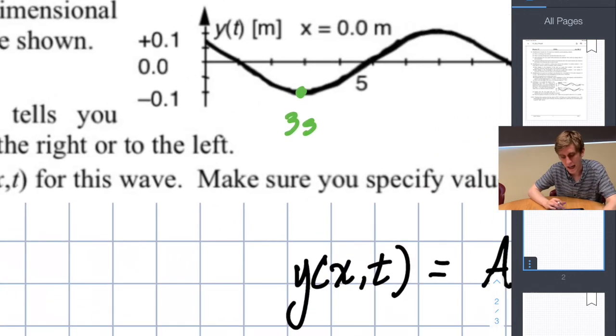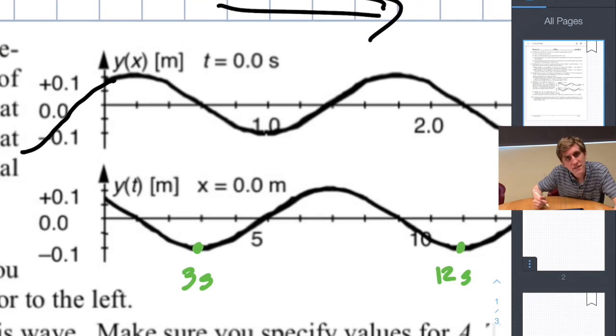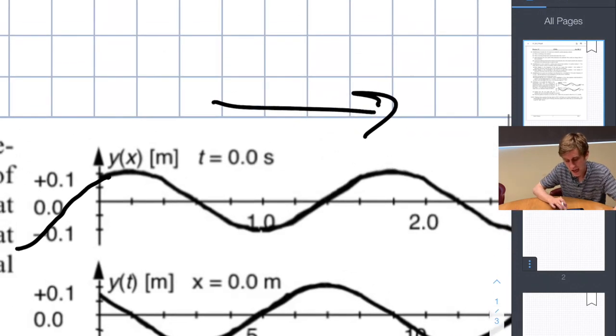Now let's look at wavelength. Just as we can't determine the time period by looking at the y of x graph, we can't determine the wavelength by looking at the y of t graph. The y of t graph only tells us how much time it takes for the full wave to pass by. It does not actually tell us how long the wave is. To do that we need to look at the wave in space, the photograph of the wave at a particular time.